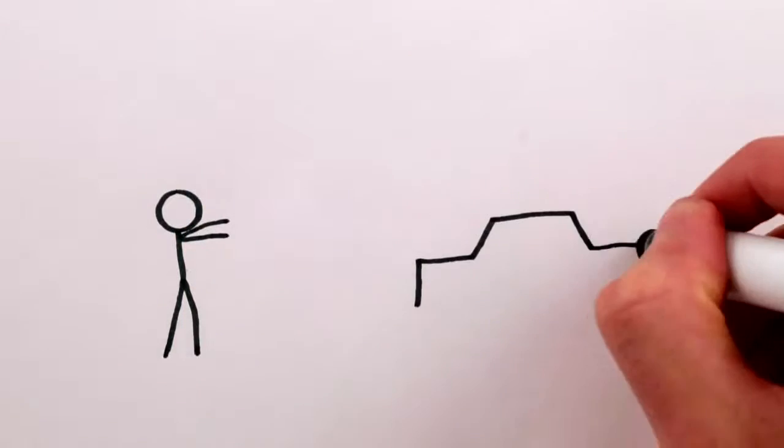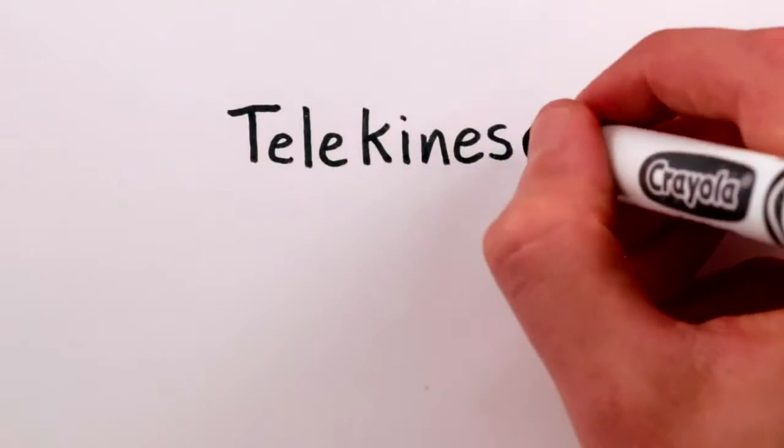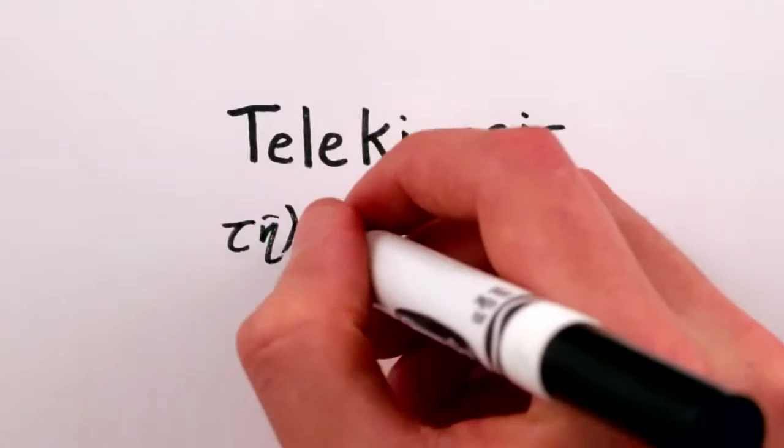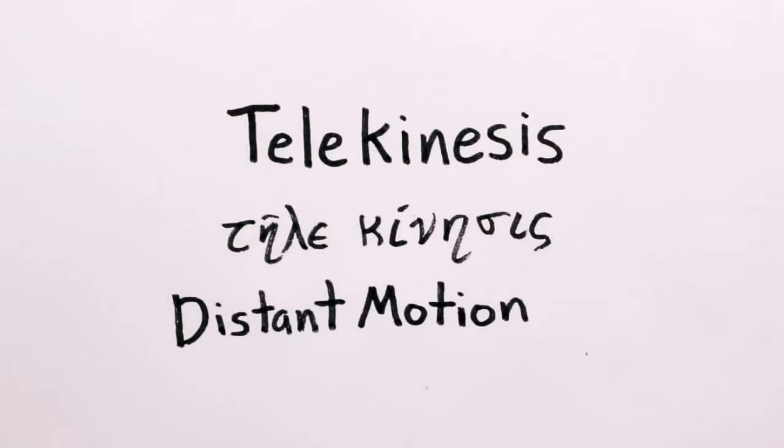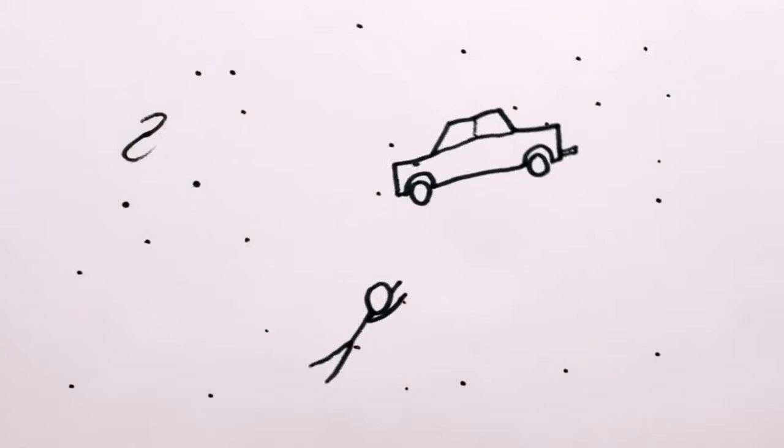We normally think of telekinesis as a kind of supernatural mental power. But the word telekinesis just comes from the Greek. Kinesis meaning motion and tele meaning at a distance. And the real universe is full of telekinesis or motion at a distance.